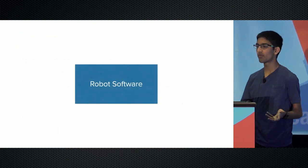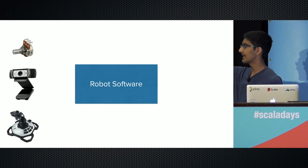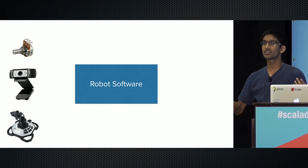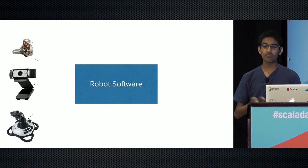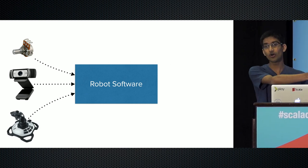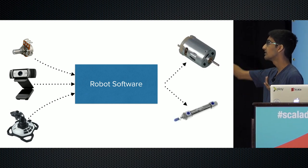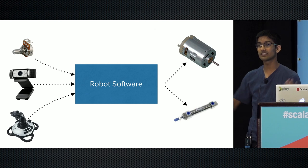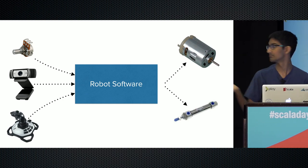When you're writing robot software, you have one goal: take inputs from sensors like potentiometers which measure angles, cameras where we apply computer vision algorithms to detect goals, and joysticks which stream data from a driver console to the robot. These all come in as streaming data sources. Our robot software needs to take all these input streams, manipulate and transform them to produce outputs to actuators like motors and pneumatics.